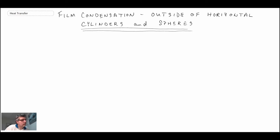We're now going to take a look at the case of film condensation on the outside of horizontal cylinders and spheres. The correlation that we'll be using is one that follows the correlation that was developed by Nusselt for the vertical plate.